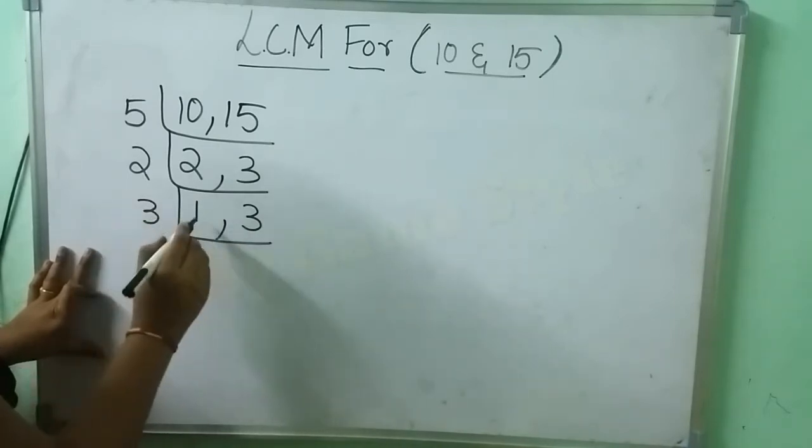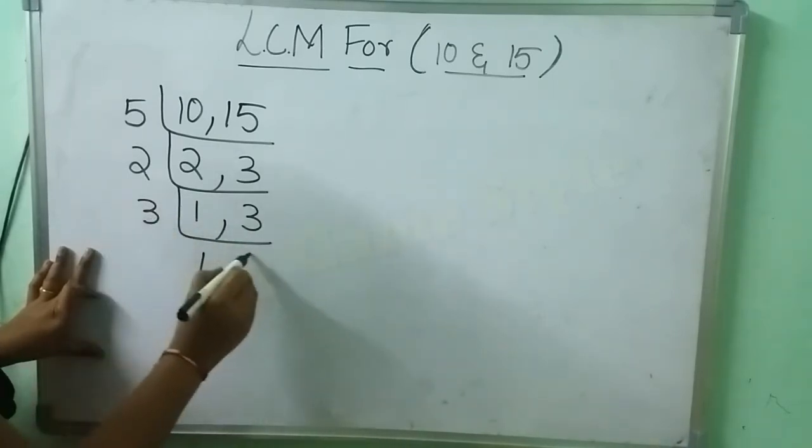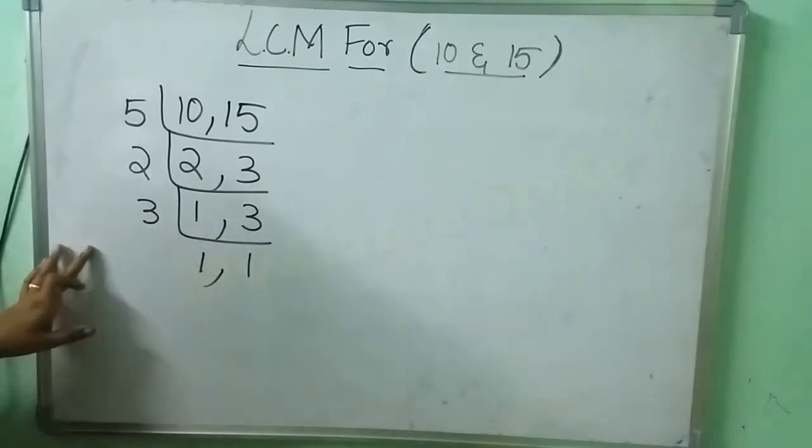Then 3 table. This 1 as it is. 3 1's are 3. 3 1's are 3.